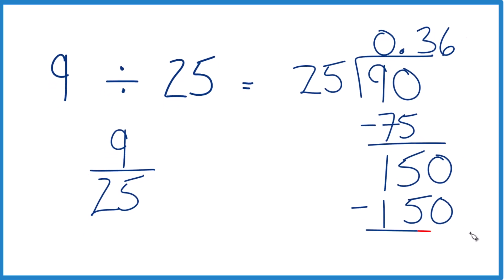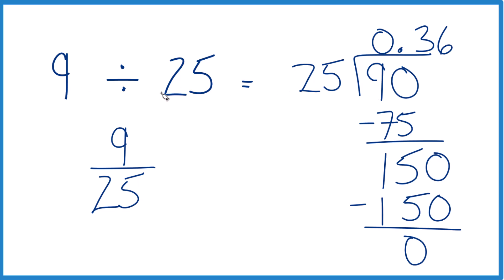So when we subtract no remainder, which is nice, and 9 divided by 25, that gives us 0.36, and we did it using long division here.